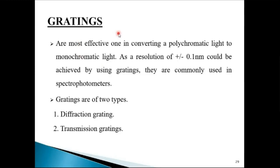Gratings can be compared to a computer CD disk. Basically, what it has is a polished surface, and on that polished surface you have successive grooves. Because of these grooves, which are very small — micro size — it causes diffraction of light. It is the most effective one in converting polychromatic light to monochromatic light. A resolution of plus or minus 0.1 nanometer can be achieved by using gratings. They are commonly used in spectrophotometers.